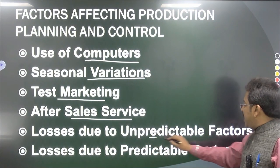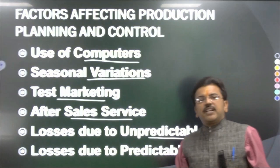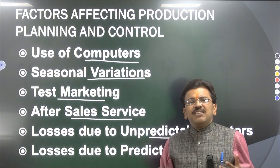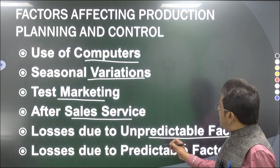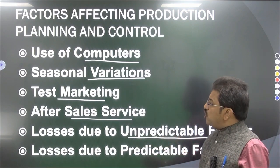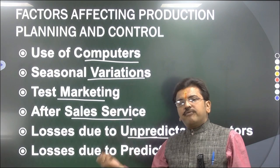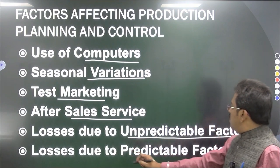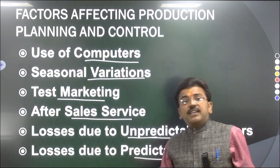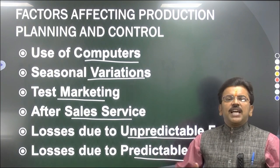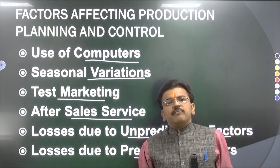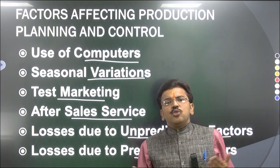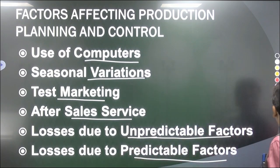Losses due to unpredictable factors — there are certain unpredictable factors such as epidemics, heavy rainfall, earthquakes. These are unpredictable reasons and losses can occur because of them; by the help of proper Production Planning and Control we can overcome or reduce that cost. Then losses due to predictable factors — predictable factors might include strikes or problems in the machines. These must be properly overcome so that losses can be reduced. All these factors directly affect production planning and control.